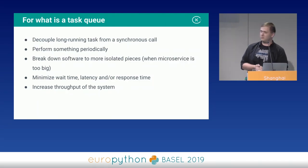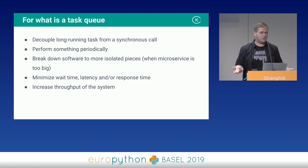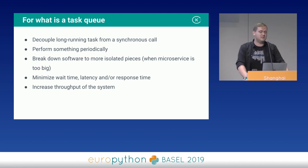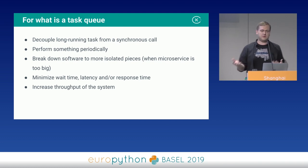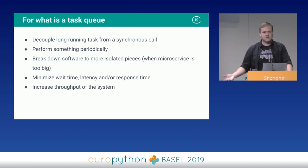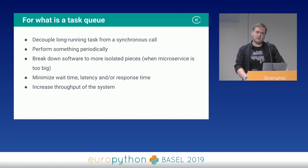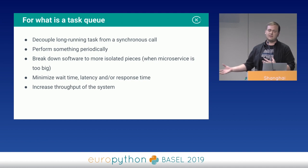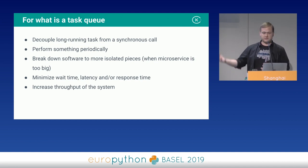Now, what is a task queue for? The most common use case is to decouple long-running tasks from a synchronous call. Your job takes a couple of seconds, but clients don't have to wait on the API response. You know the result beforehand, so you reply that you've accepted the task and are working on it, and then asynchronously you can work on it and eventually call a webhook or send an error to the external service.